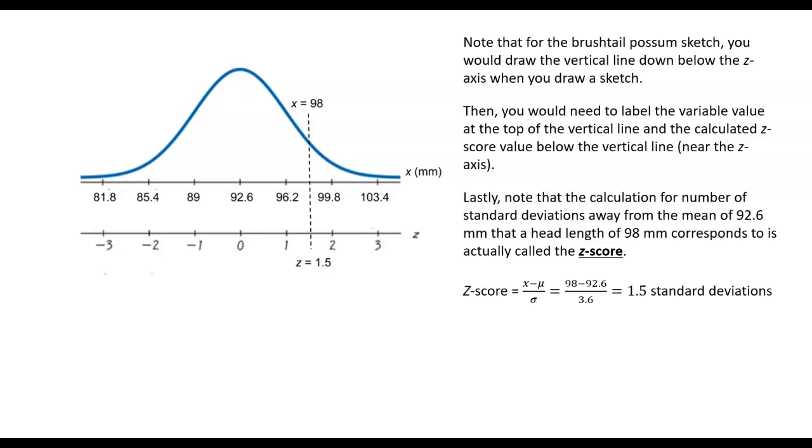Lastly, note that the calculation for the number of standard deviations away from the mean of 92.6 millimeters that a head length of 98 millimeters corresponds to is, as I've already mentioned, called a z-score. And I've shown the calculations and the formula, which the narrator will present a little bit later on in his presentation.